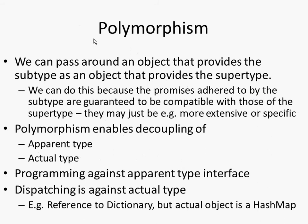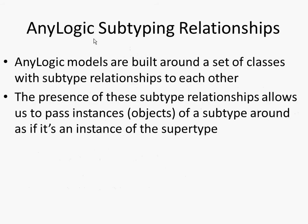The notion of polymorphism — the fact that we can pass in a person where an agent was expected in connect-to — that's polymorphism, an example of polymorphism. As I said, AnyLogic models are built around a set of classes with subtype relationships, so agent, person, active object. A person is an agent, is an active object. And by virtue of that, it has certain abilities.